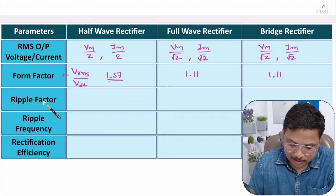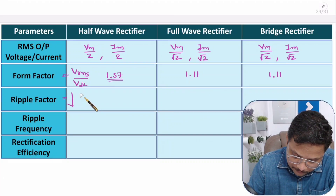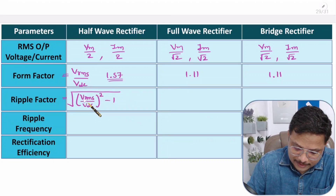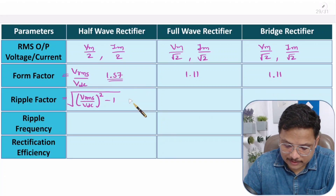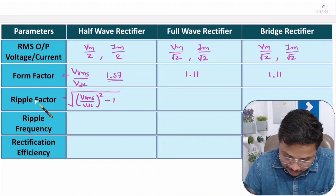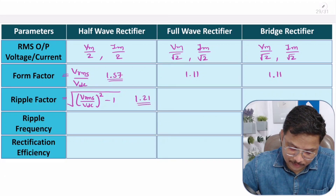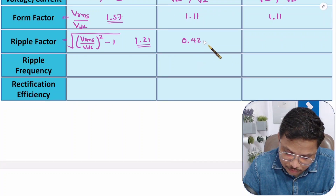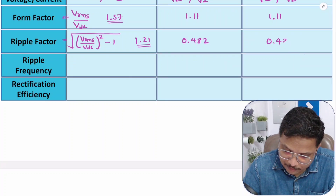Now the ripple factor. Ripple factor is calculated as the square root of (Vrms/Vdc)² − 1, which is the square root of (form factor² − 1). So for half wave: √(1.57² − 1) gives a ripple factor of 1.21. For full wave and bridge rectifiers the ripple factor is 0.482.